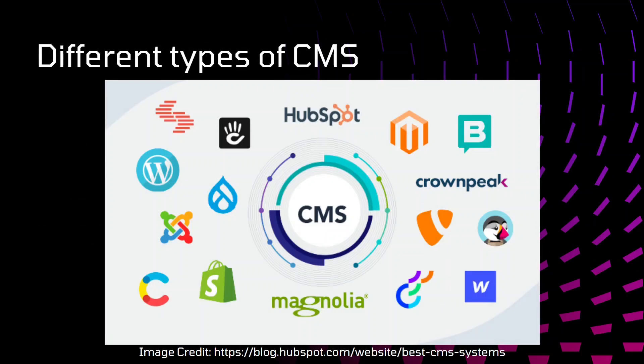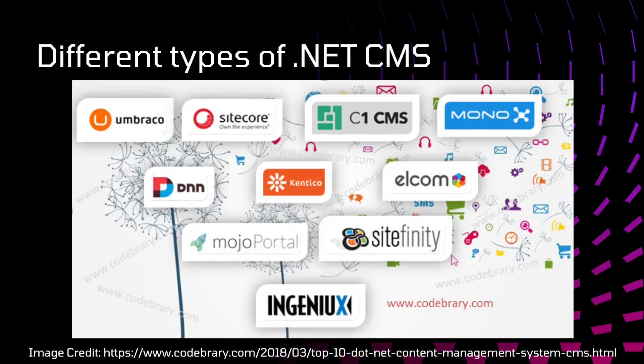These are some examples of different types of CMS: WordPress, Joomla, Shopify, Optimizely, and HubSpot. These are examples of .NET CMS: Umbraco, Sitecore, MojoPortal, Sitefinity, and Kentico. Mostly we will be dealing with Sitecore here.